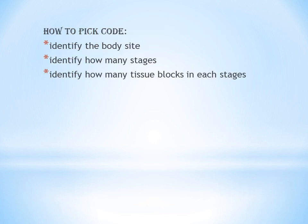How do you pick a code for Mohs Surgery? First, identify the body site. In the code description you can see: head, neck, hands, feet, genitalia, or any location with surgery directly involving muscle, cartilage, bone, tendon, major nerve or vessels — these are classified into one group. The other group includes trunk, arms, or legs.